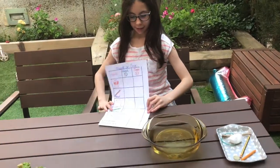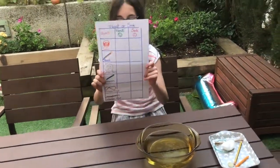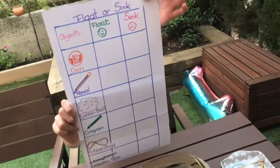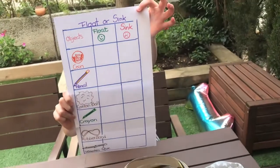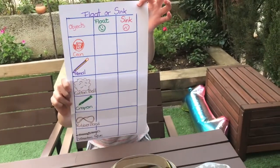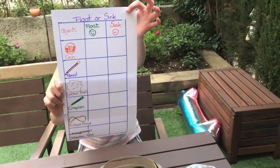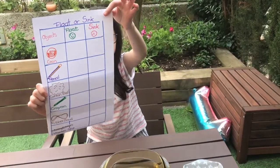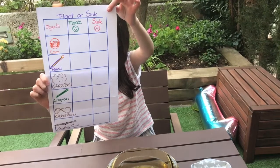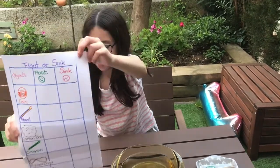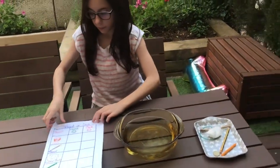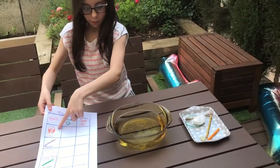Today's experiment is a simple one — we're going to check whether some stuff floats or sinks. To do so, we create a list with all the objects we're going to use for the experiment.